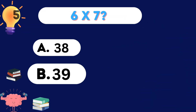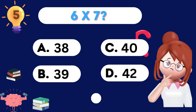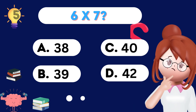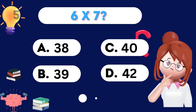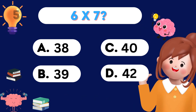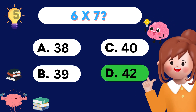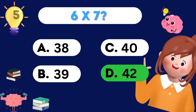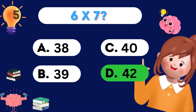What's 6 times 7? 6 times 7 is 42. Hooray!